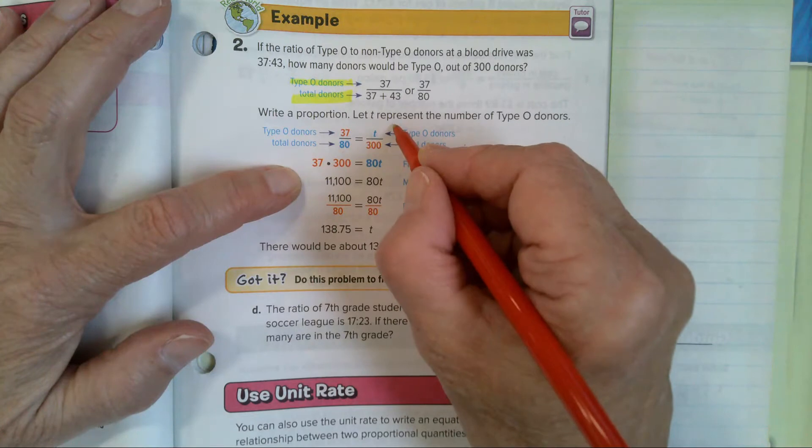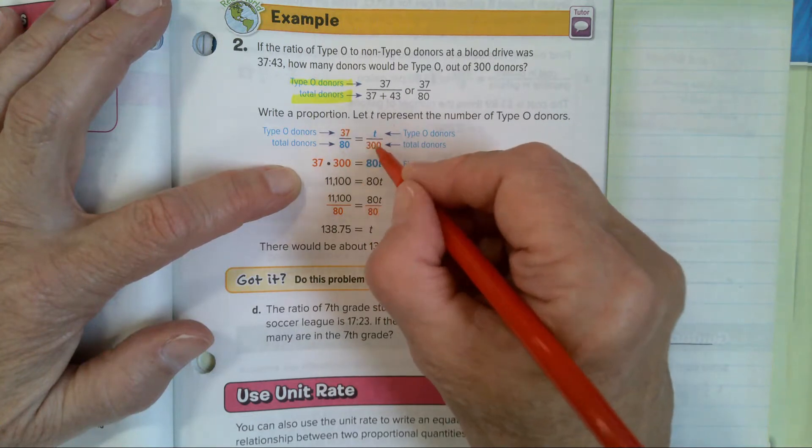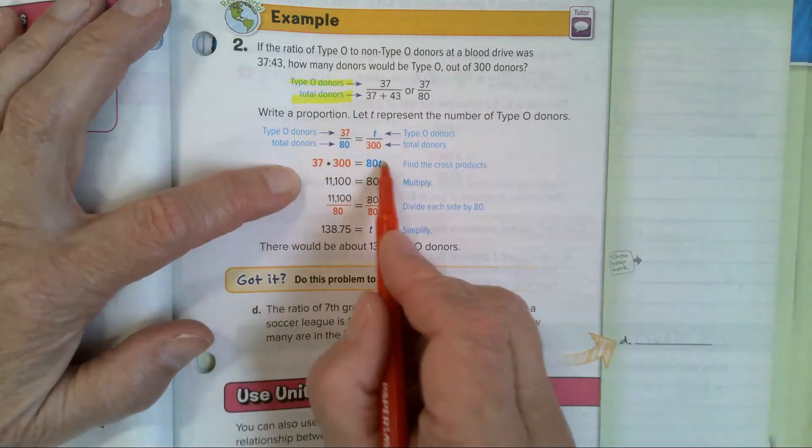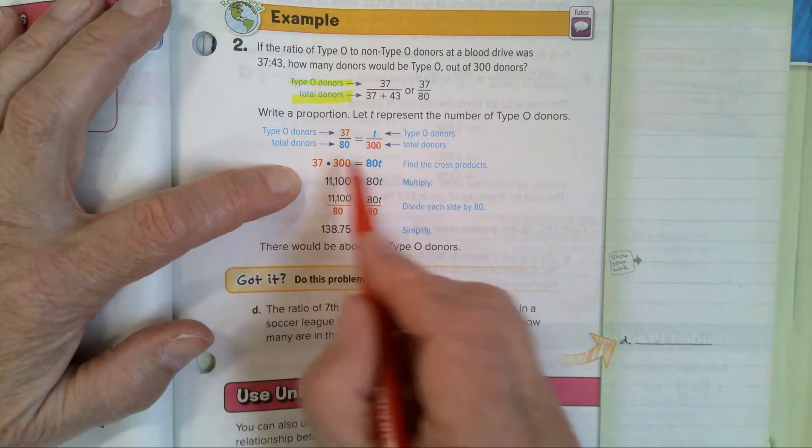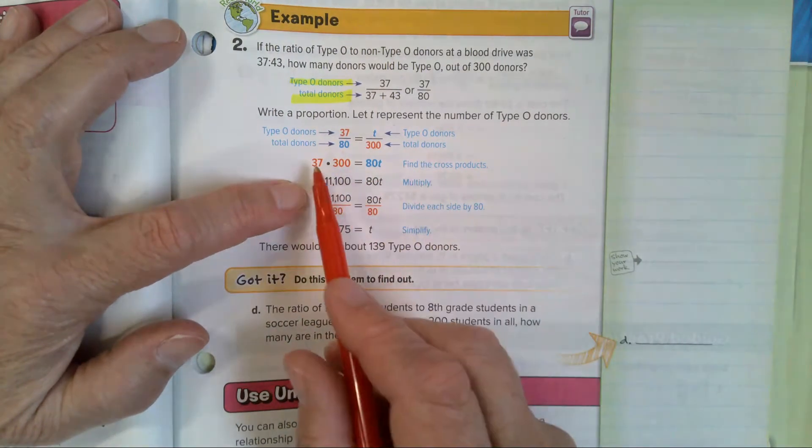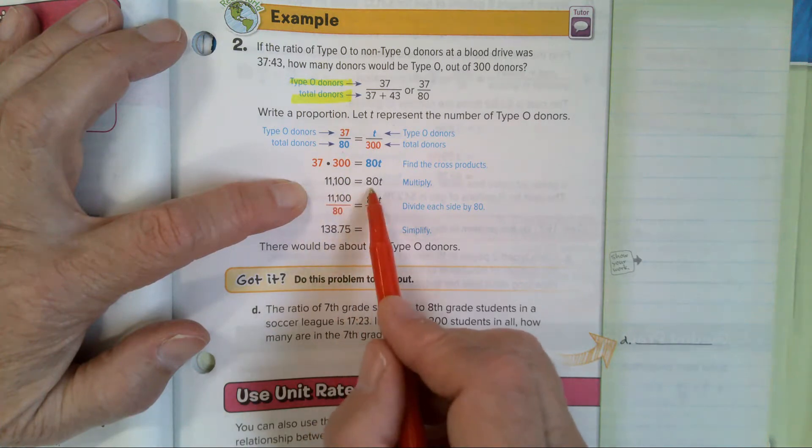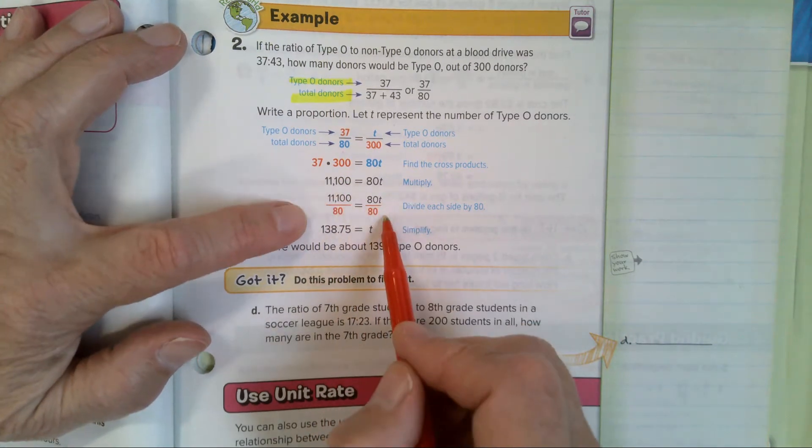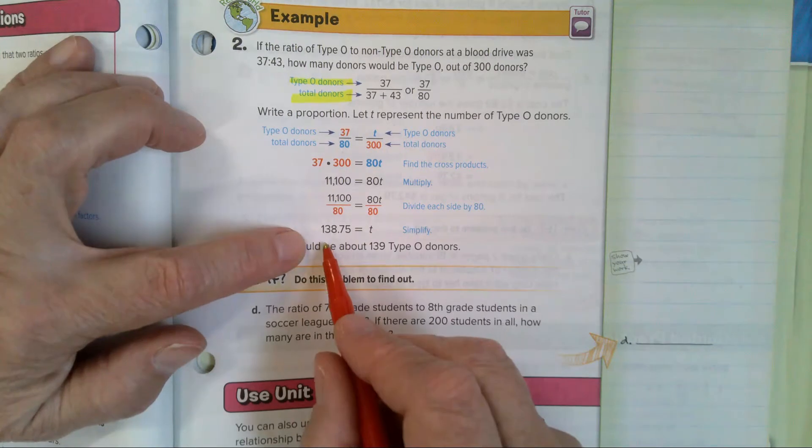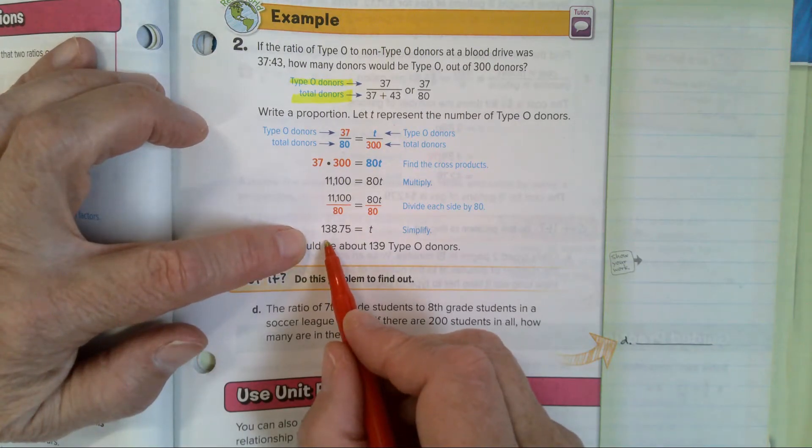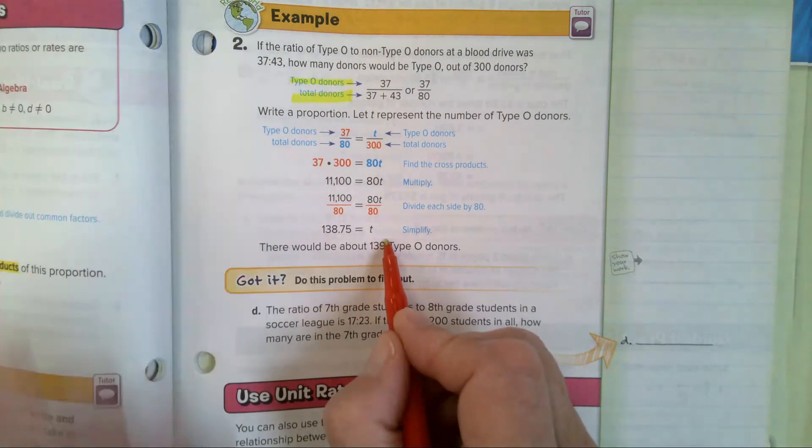Now write a proportion. Let T represent the number of type O donors. So you have 37 over 80. They added them both together to get total. Equals T over 300. Do you see how they got that information? Now it's cross product time. 80 times T equals 37 times 300. 37 times 300 is 11,100 equals 80 times T. Divide by 80. With your calculator, you get 138 and 75 hundredths equals T.